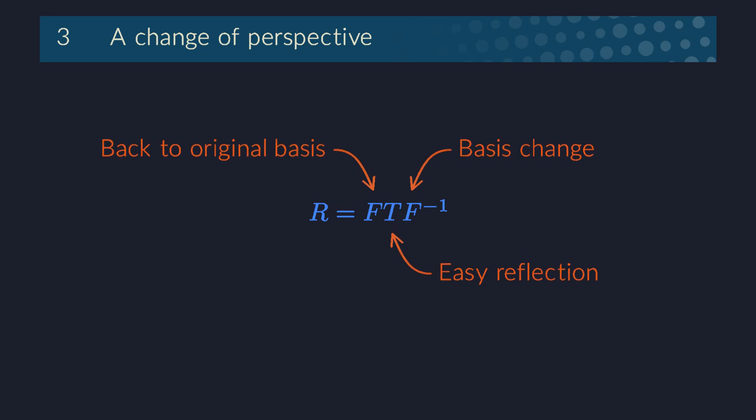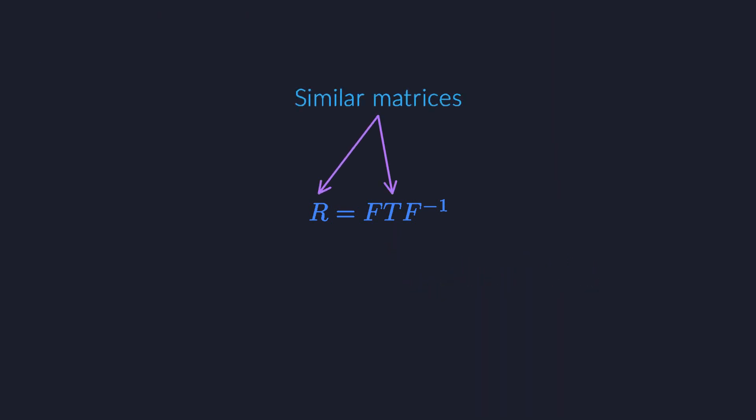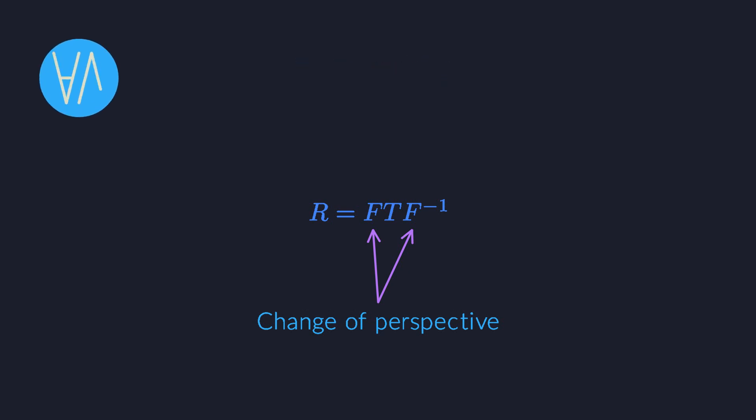The two reflection matrices are called similar. Whenever one matrix can be written like this, as a sandwich with a different matrix in the middle, we say that those two matrices are similar to each other. Geometrically, they perform exactly the same linear transformation, a reflection over the line. We just look at this transformation from two different coordinate systems. Our perspective changes, but the transformation itself doesn't.